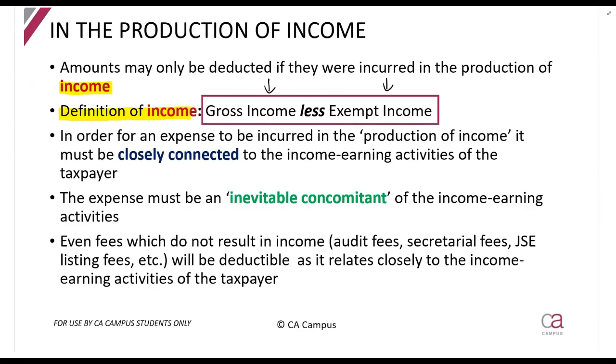If you spend money paying your auditors audit fees, if you spend money to buy stationery, if someone sues you and you have to pay damages, all of those amounts, can you claim a deduction for it? How do we know? We test it against the general deduction formula. And we test specifically against this in the production of income. What the production of income said, is it tells you that an amount must be closely connected to the income activities of the taxpayer. That basically means it must be a part of your business. They tell you it must be an inevitable concomitant of income earning activities. What does inevitable mean? It means unavoidable. But there's another word I also want you to use there. Necessary. And concomitant means part. It means it must be a necessary part of doing your business.